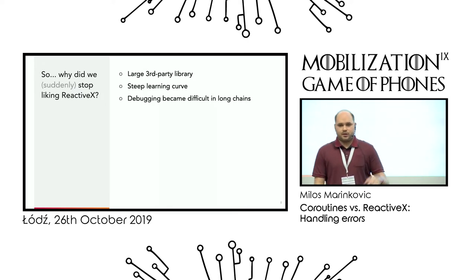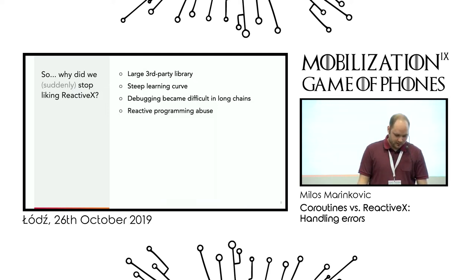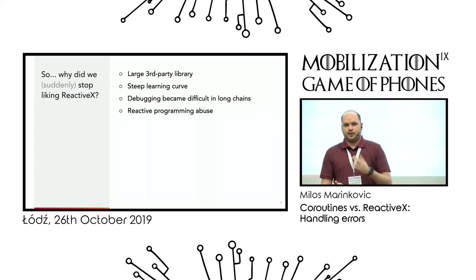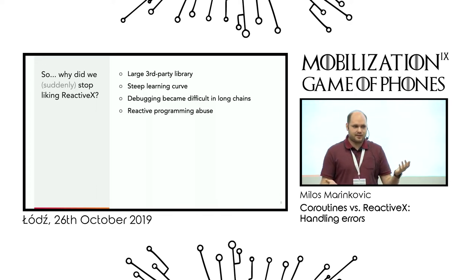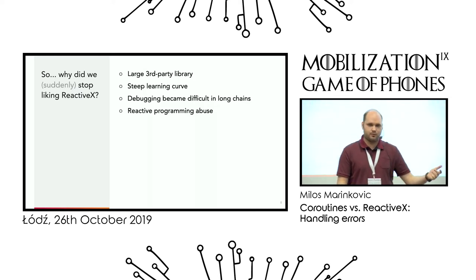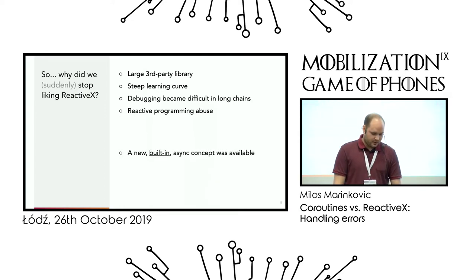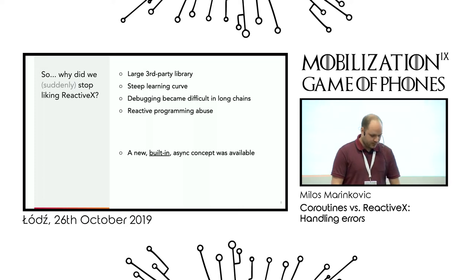Debugging — if you have some huge chains that depend on other observables or singles or other chains, it can get difficult to debug why things are happening. People were abusing reactive programming. We were doing for loops — just simple for loops — using Rx. We would go from observable, from iterable, do the for loop, then come back to main. So there were a lot of things going on with Rx. I still think it's a good library, a good tool for its own purpose, if you really need it.